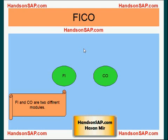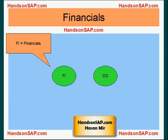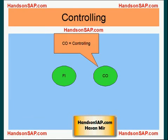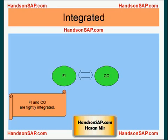First thing first: FI and CO are two different modules. Although the term 'FI CO' is used together, they are two different modules. FI stands for Financials and CO stands for Controlling. FI and CO are very tightly integrated modules.